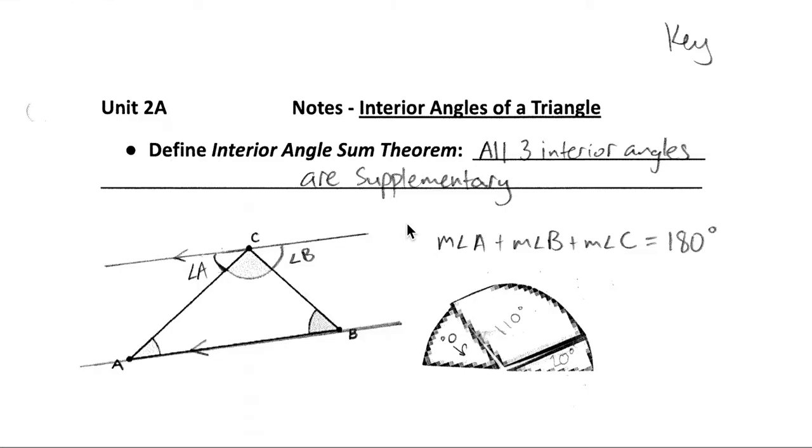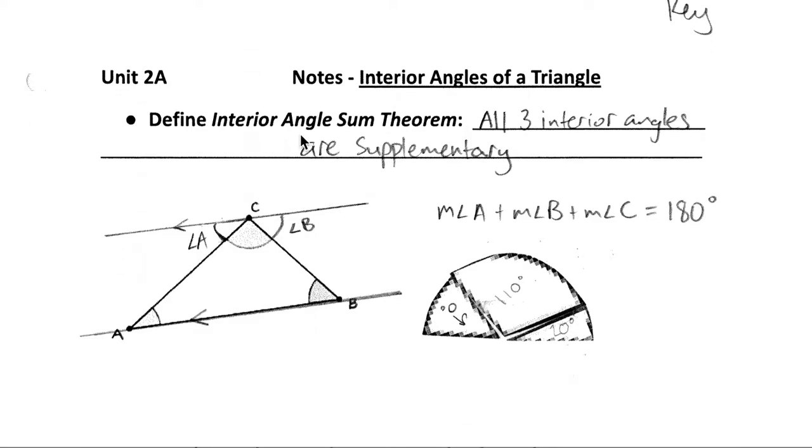In this video, we're going to be talking about interior angles of a triangle, specifically what they add up to and how we can use that to find an unknown angle measure. To start off with, we've got the interior angle sum theorem, which simply states that all three interior angles are supplementary. So all the angles inside a triangle are going to add up to 180.